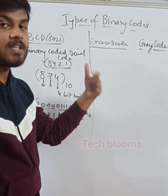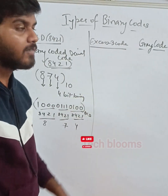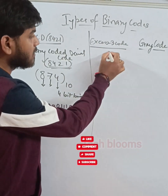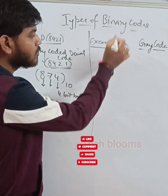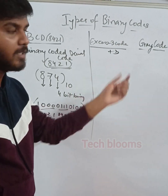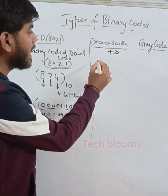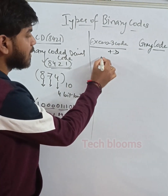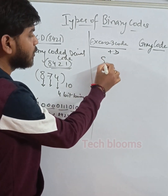X is 3 — the name itself tells you it's plus 3. So always, given a decimal number, you need to just add 3 to that decimal number.